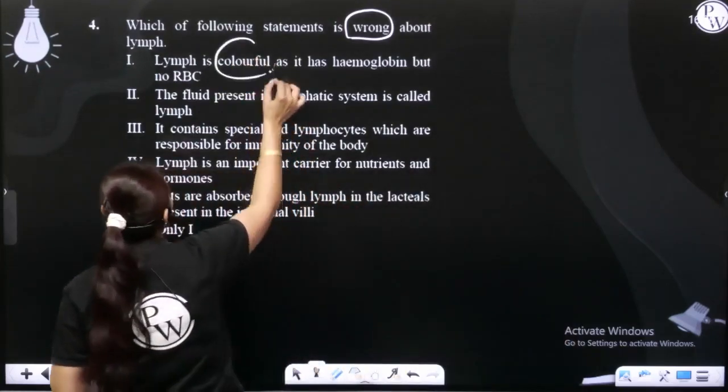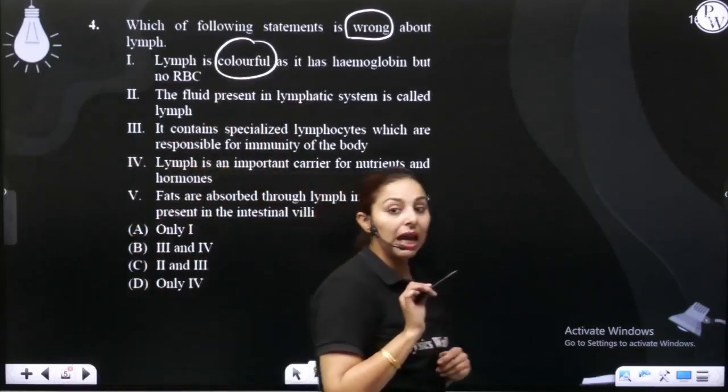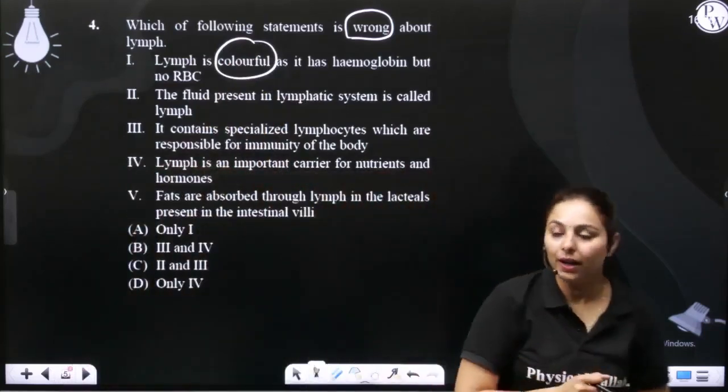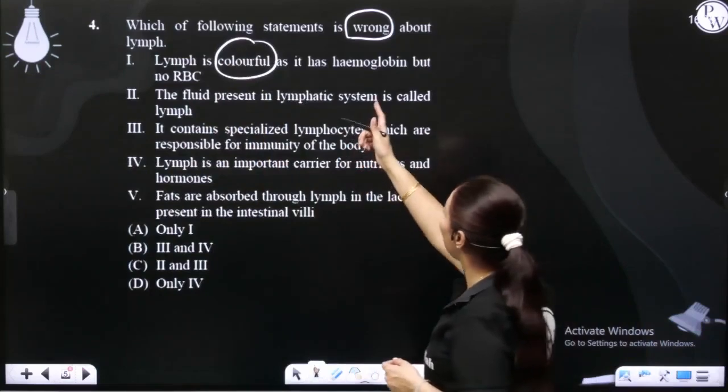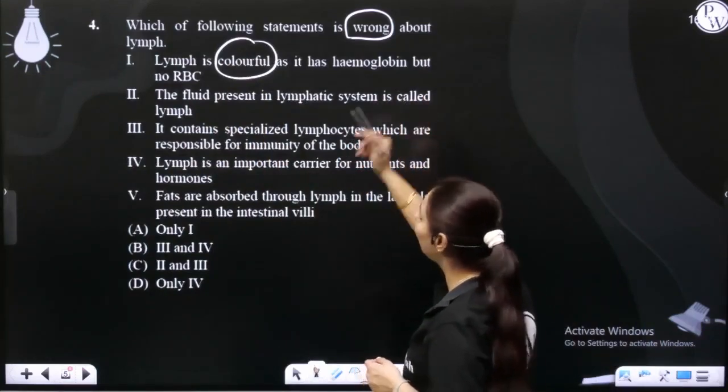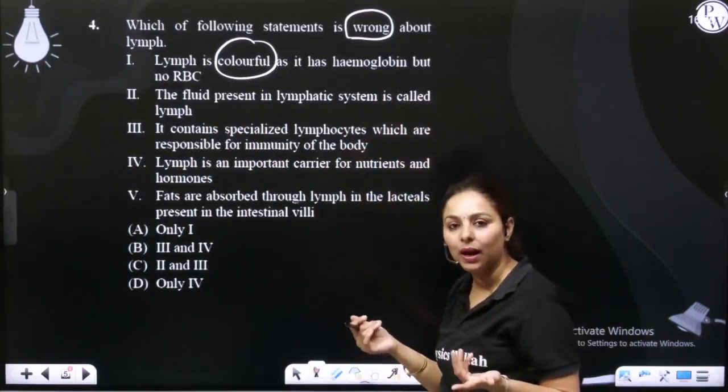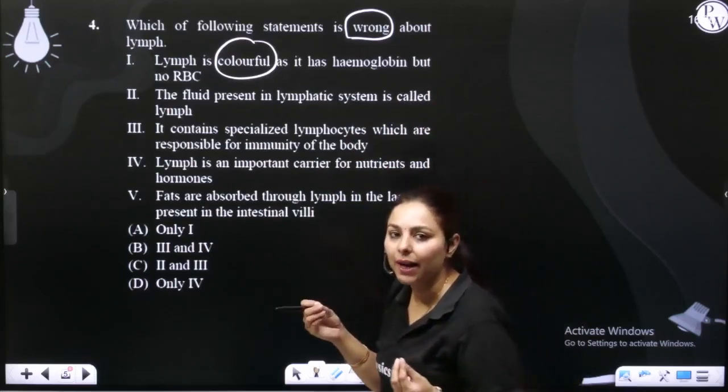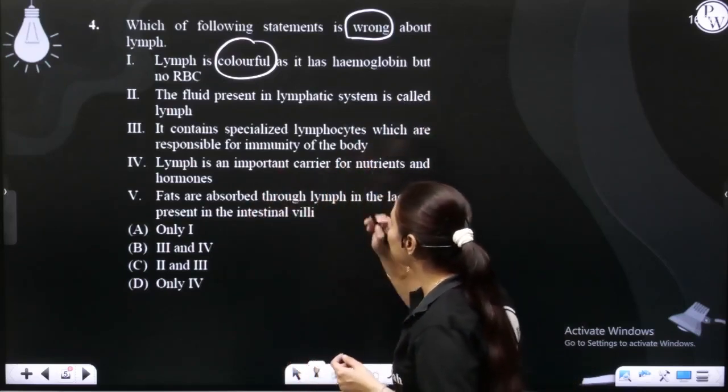Is lymph colorful? No, it can't be colorful. The statement says lymph is colorful as it has hemoglobin but no RBC. But lymph doesn't have hemoglobin. It's not colorful. So this is the wrong statement.